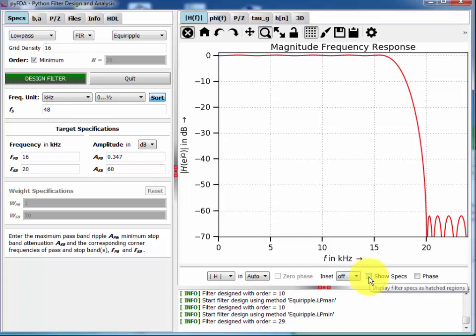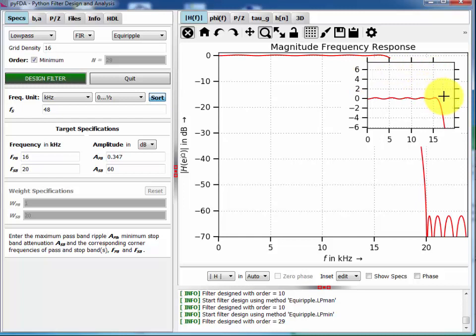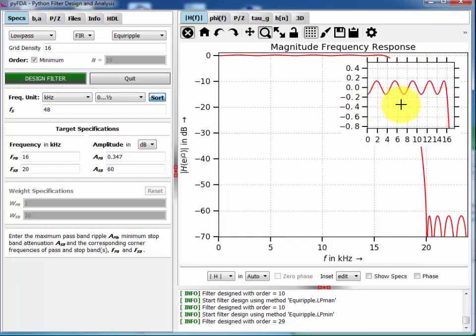So I can disable the specifications again. If you want to look at the pass band and the stop band at the same time you can also enter an inset window here. Zoom in and then you have the best of both worlds. So you can have a clear look at the stop band and at the pass band at the same time.